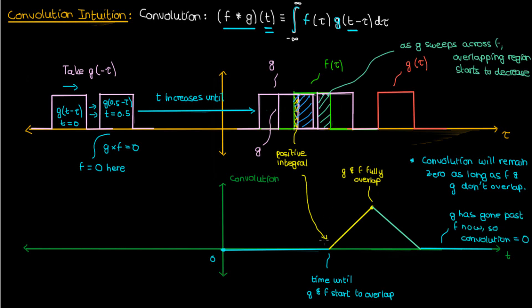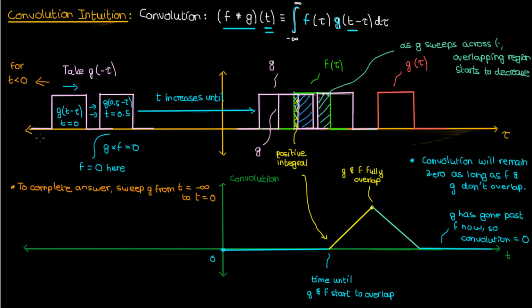Notice that I started sweeping at t equals 0 and continued until t equals infinity, which means my answer for the convolution isn't complete because I haven't swept g from t equals negative infinity to t equals 0. For this particular problem, if I started g all the way to the left at negative infinity and swept it forward until t equals 0, there would be no point where g and f overlapped, so the convolution would be 0 for all negative values of t. But you have to sweep from negative infinity to infinity, not just from 0 to infinity.